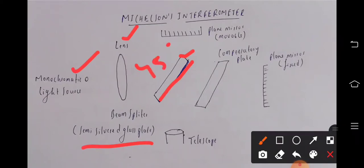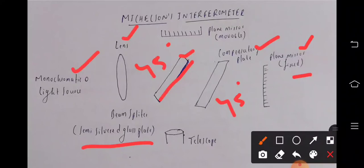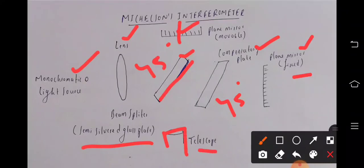Next to it, a compensating glass plate is placed which is also kept at an angle of 45 degrees. Next to it a plane mirror is placed which is fixed. Here another plane mirror is used which is movable — we can move this plane mirror. Below the beam splitter, a telescope is placed to observe the interference pattern. This is the construction of the Michelson interferometer.